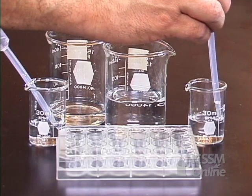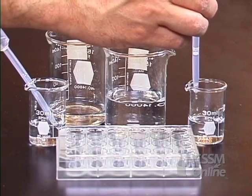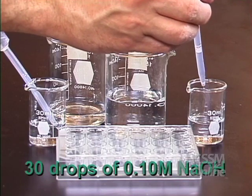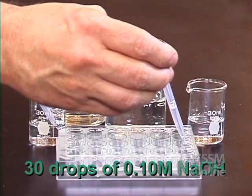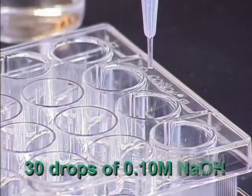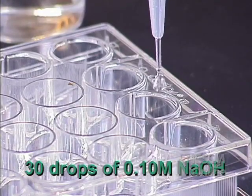Now take your basic dropper and add 30 drops of 0.1 molar sodium hydroxide to the last well in the third row.